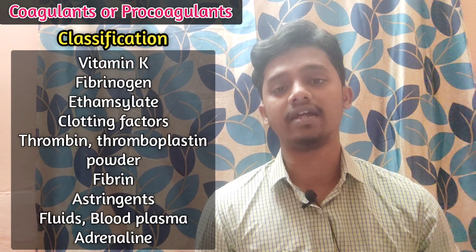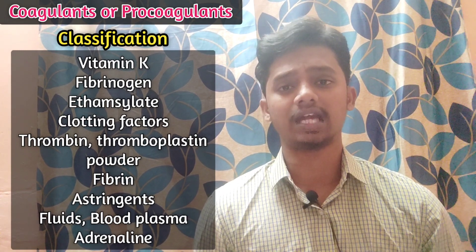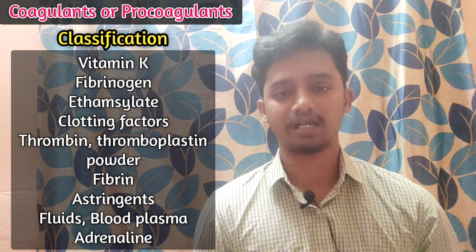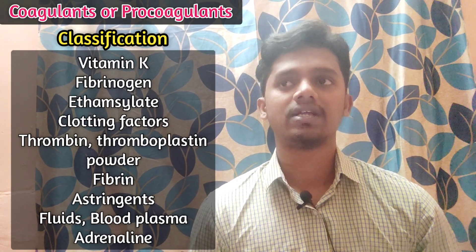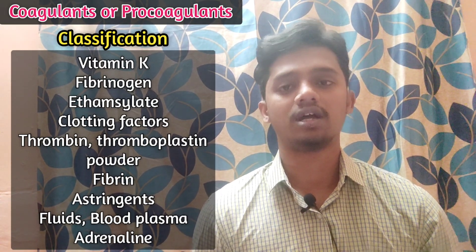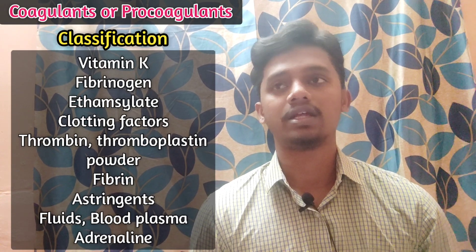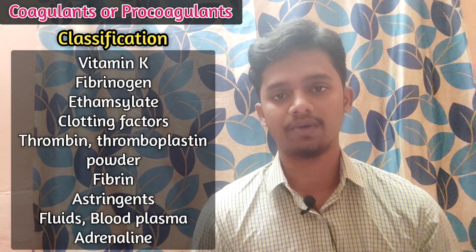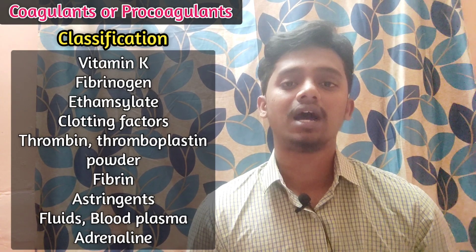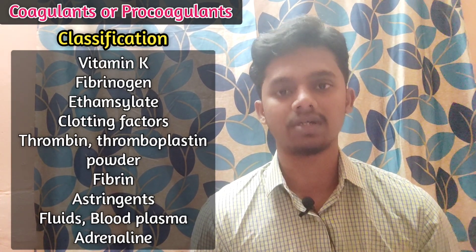Astringents like tannic acid and gums can be used to stop bleeding. Adrenergic drugs, which are hormones, can be used to cause vasoconstriction — constricting the blood vessels — which reduces blood flow. So these are also a type of coagulant.